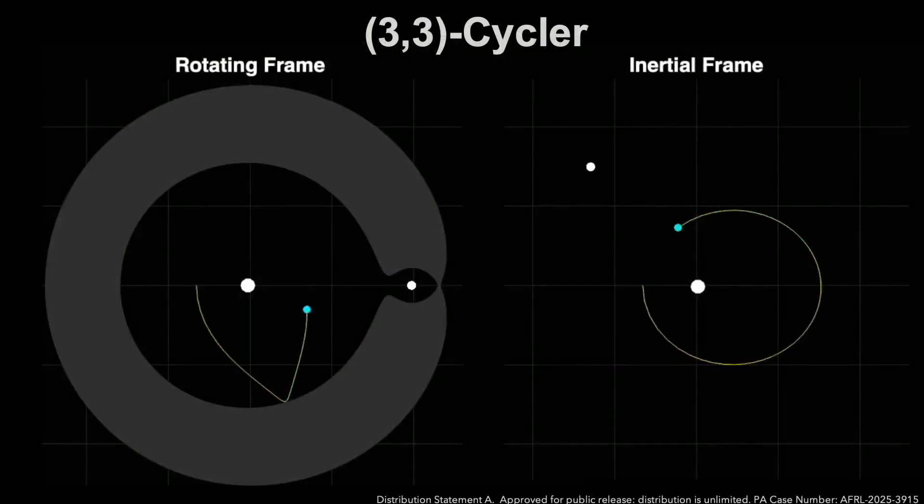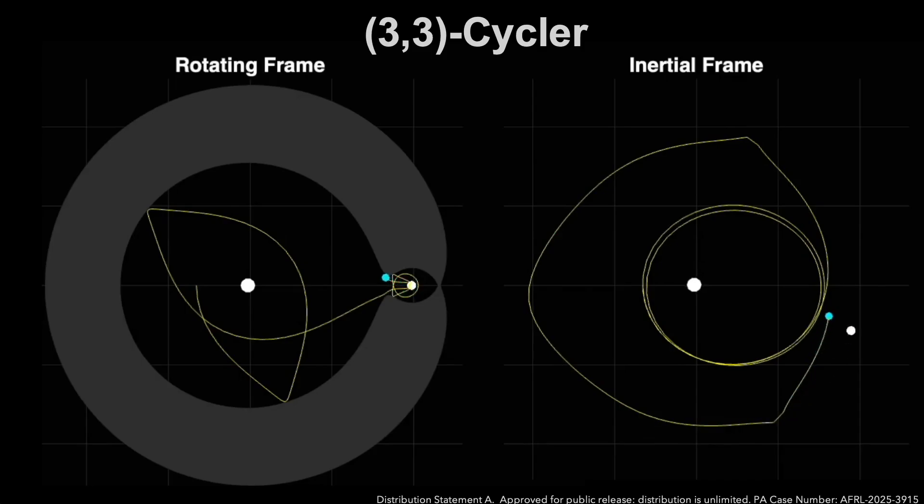That orbit I showed before is technically a (3,3) cycler. In fact, you can count the number of times that it crosses U2+ three times, and then U1- it crosses exactly three times, and then it will repeat. We're looking on the left-hand side in the rotating frame and the inertial frame. It's not so clear, especially near the Moon.